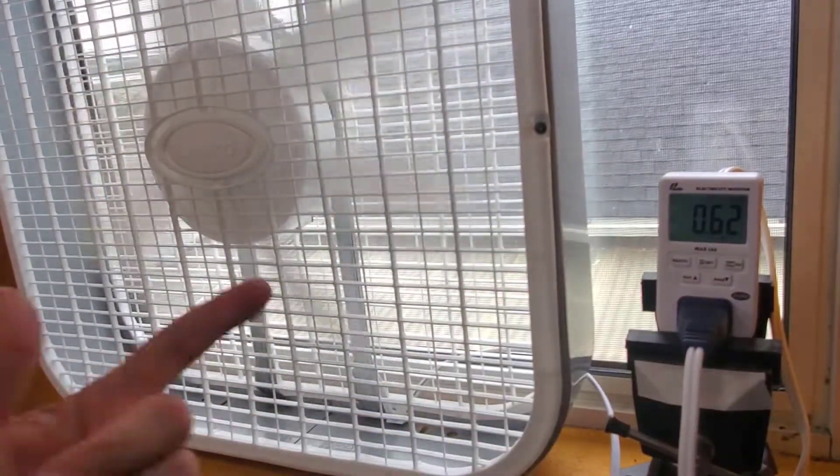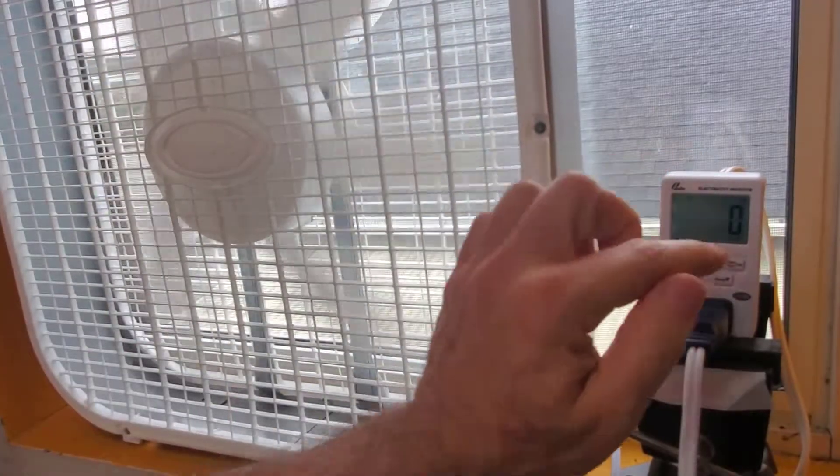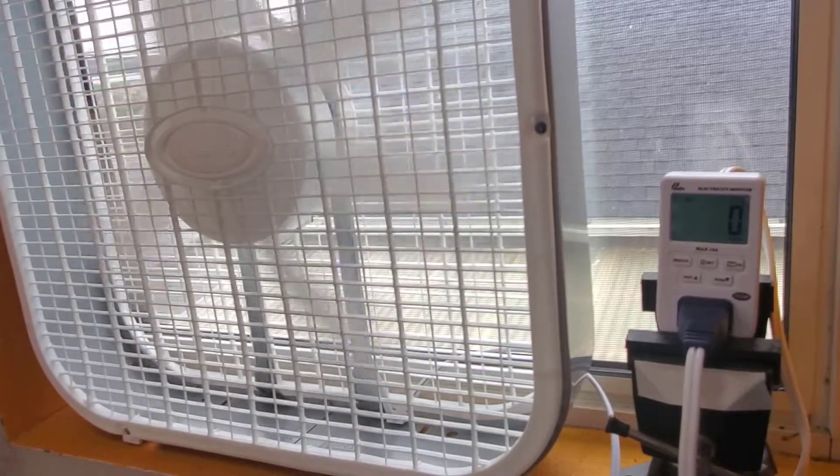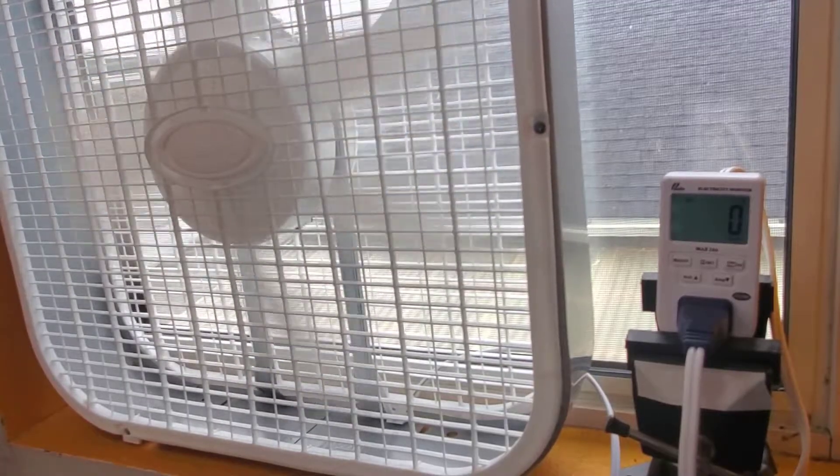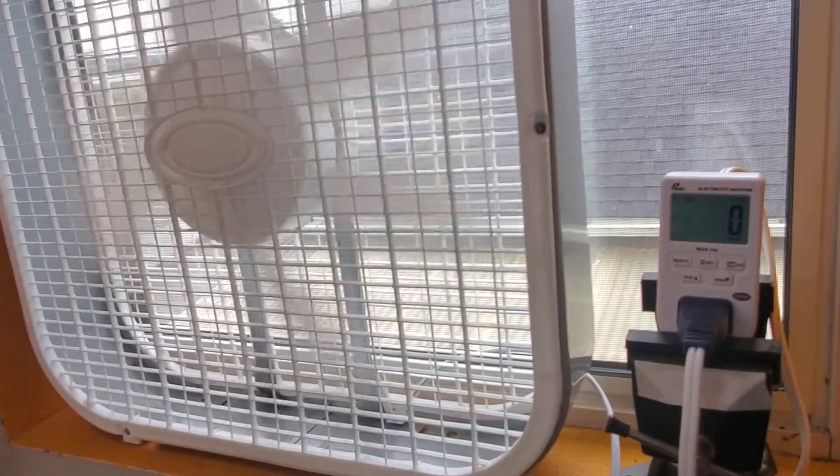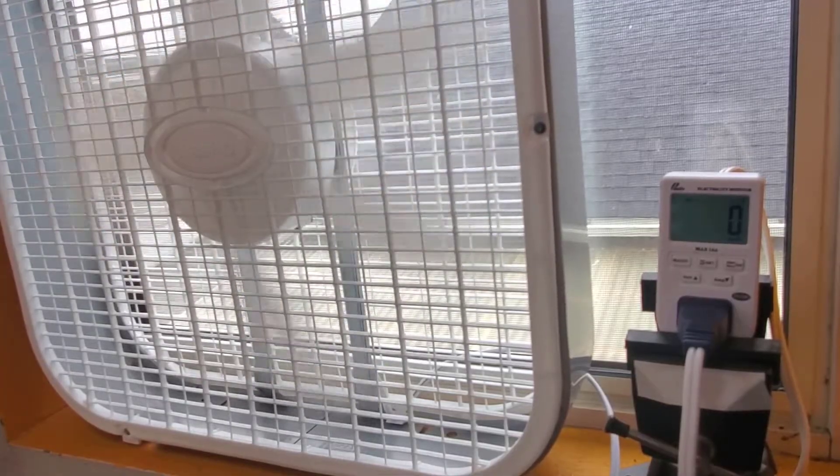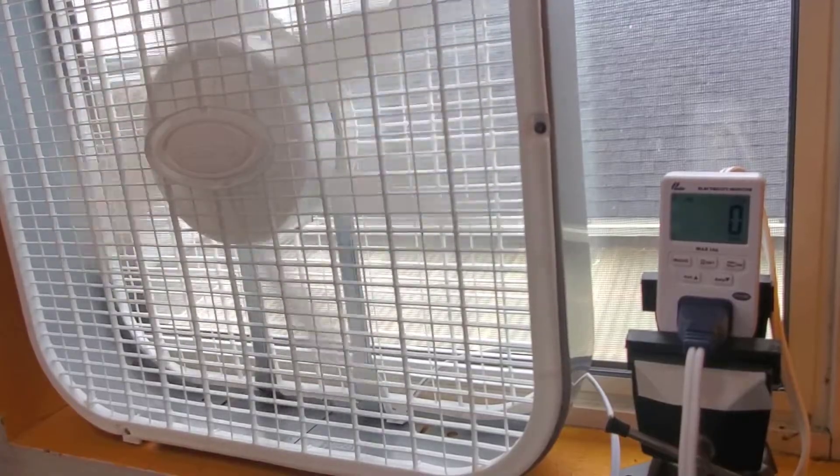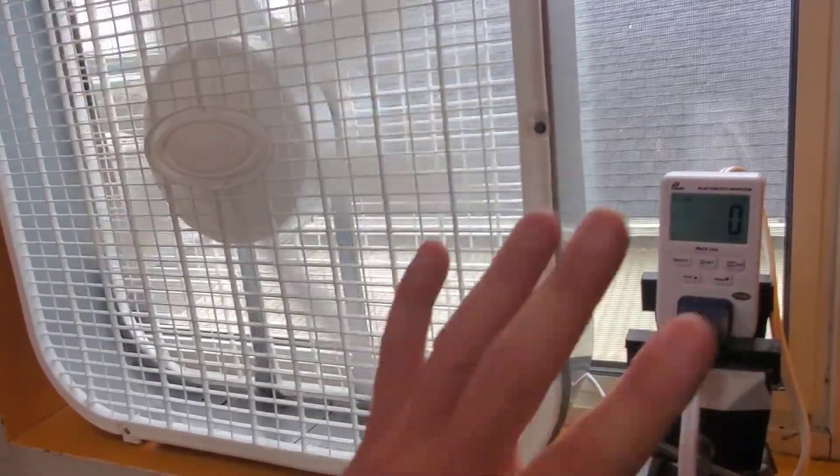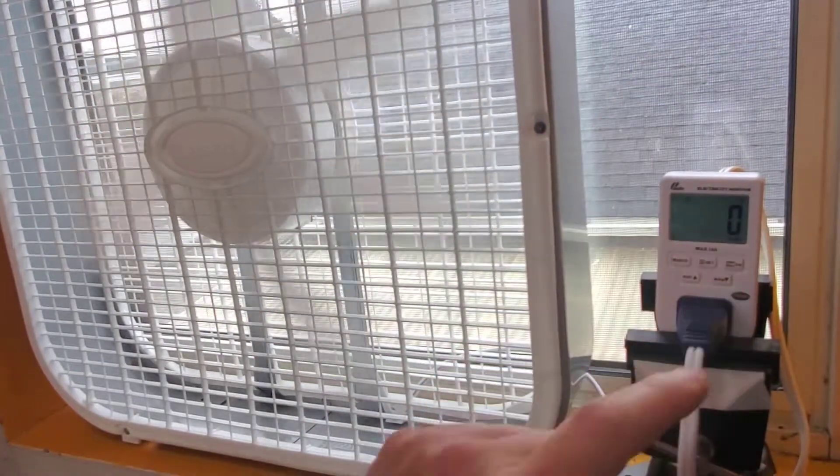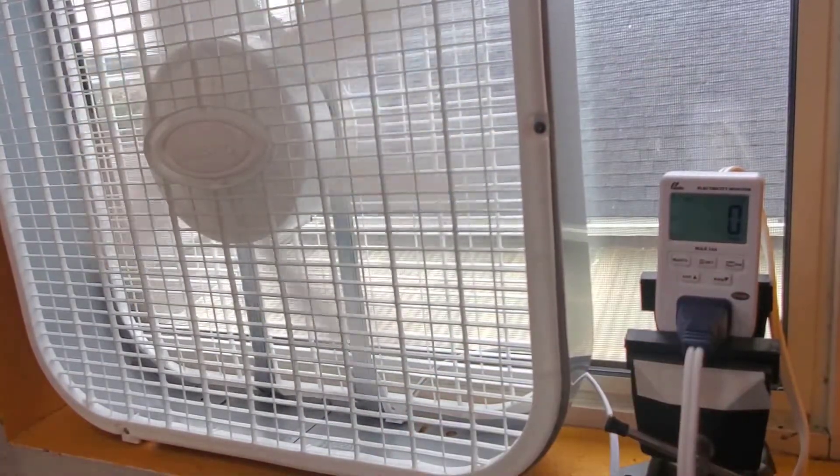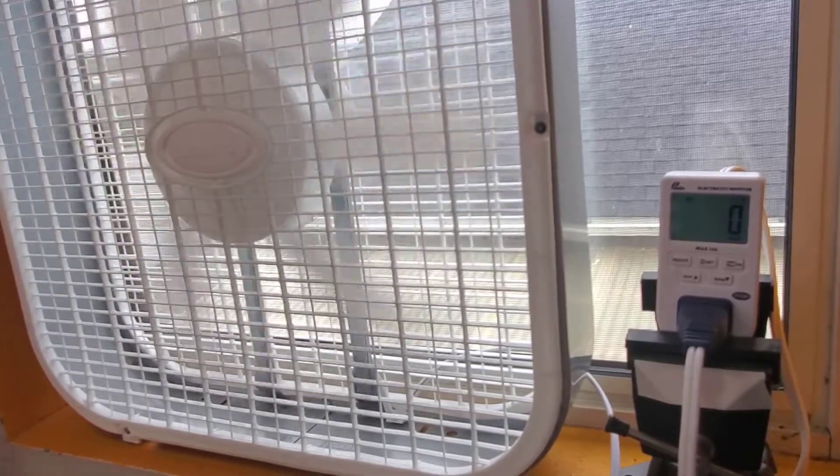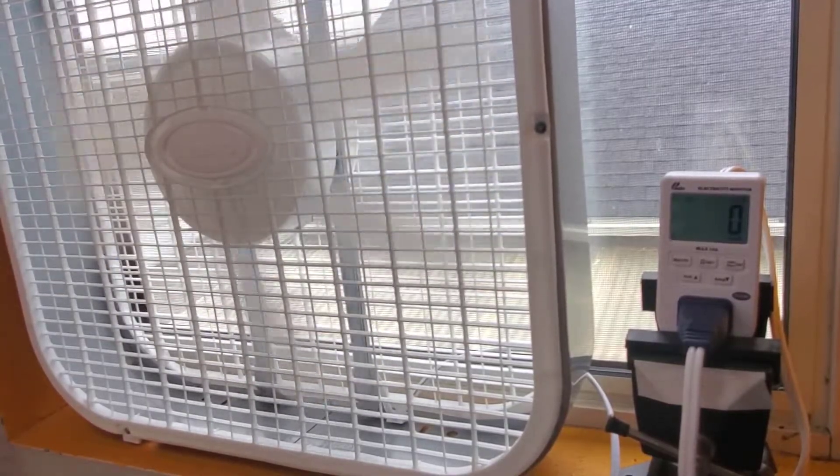If I leave this on for a while you'll see this kilowatt hours start to build. There are some benefits to that because some devices use different amounts of power at different times. For instance, your refrigerator, sometimes it might be 500 watts, sometimes it might be 50 watts as it goes through its different cycles. So leaving this plugged in and using the kilowatt hour setting you can figure out, let's say after 24 hours, how much energy your refrigerator has used even though it's been at different watts throughout the day.